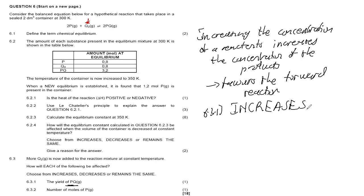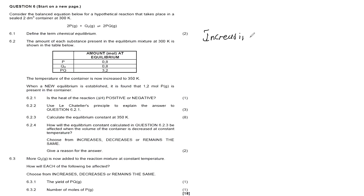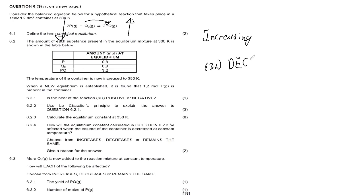Question 6.3.2 asks: what will happen to the number of moles of P? Increasing the concentration of reactants favors the forward reaction. If the forward reaction is favored, products increase, but the reactants will decrease — because adding more Q₂ encourages more collisions and the reactants are used up. So the number of moles of P, being a reactant, will decrease.